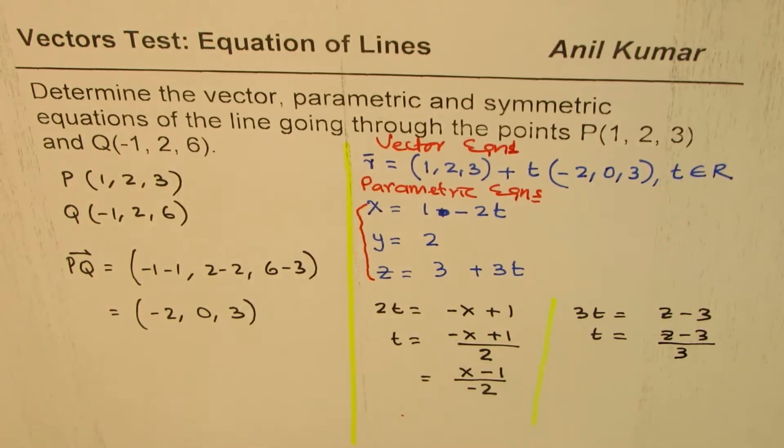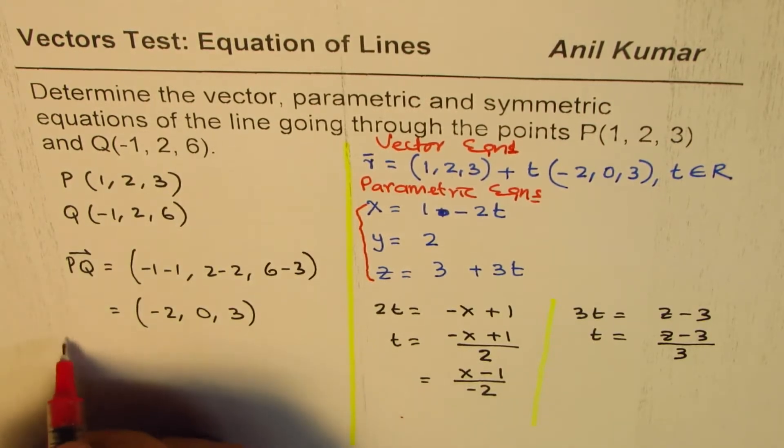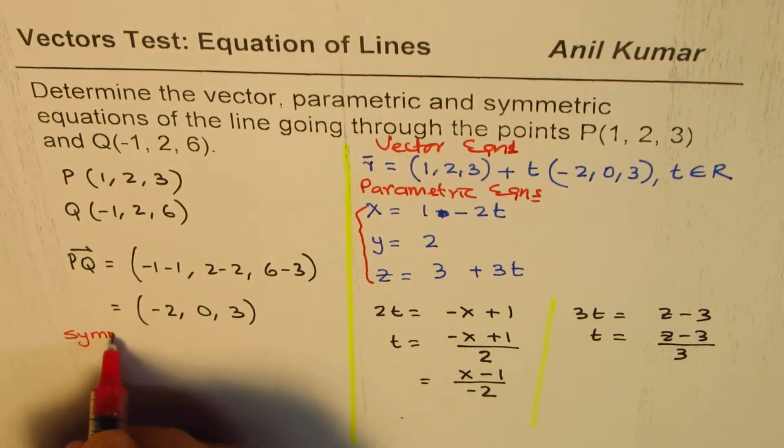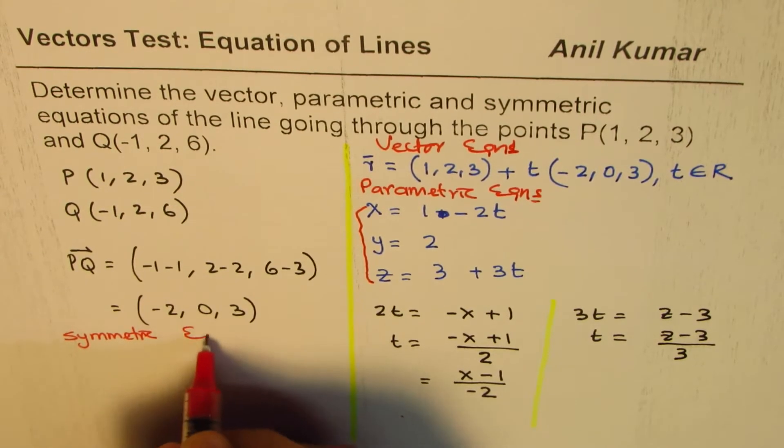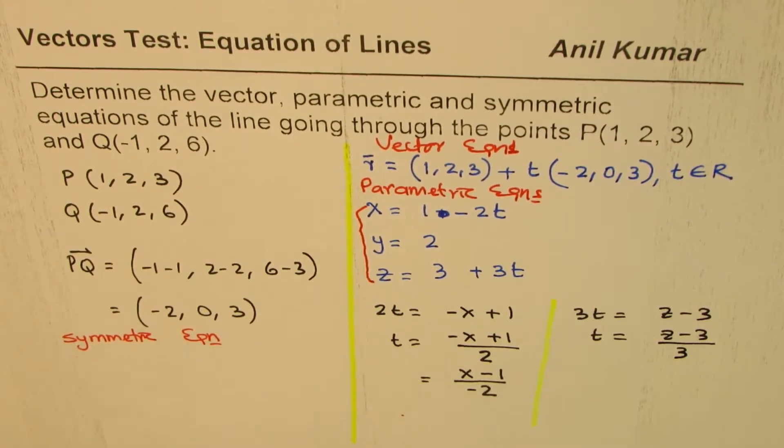Now, all these t should be exactly the same. And that gives you the symmetric equation. Now, I'll write down the symmetric equation on the left side this time. I only prefer to provide all the solution in just a small piece of paper, just half of the page.